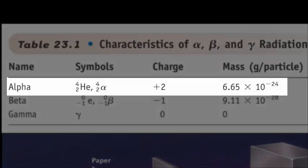The symbol for alpha, if you look at it, there are two symbols that are commonly used. The first is the symbol for a helium-4 atom. The other has the same mass number 4 and 2, but has the symbol alpha.